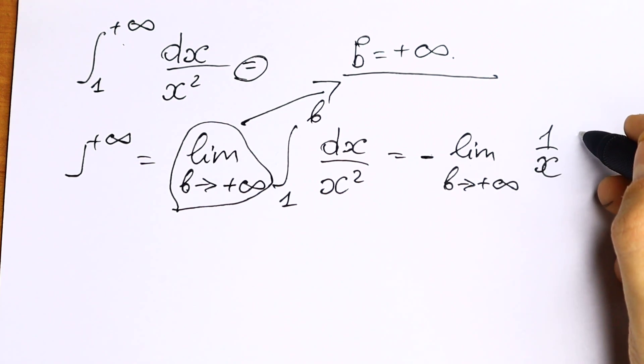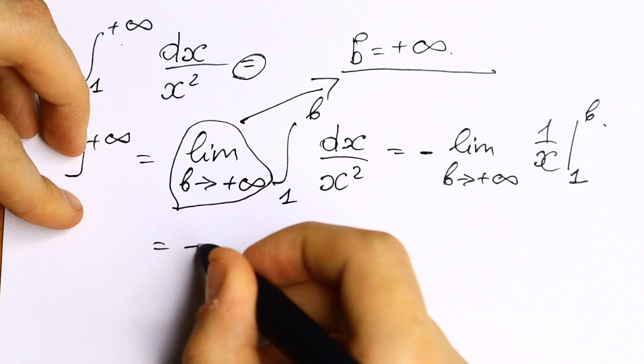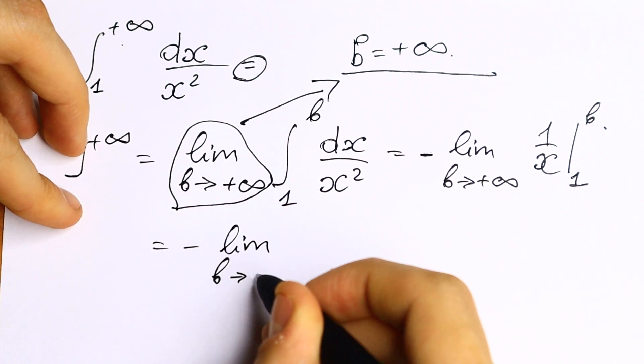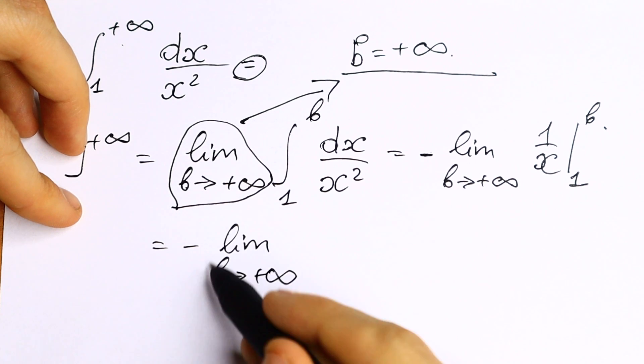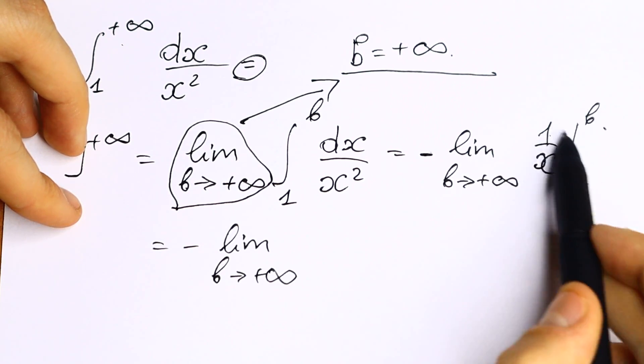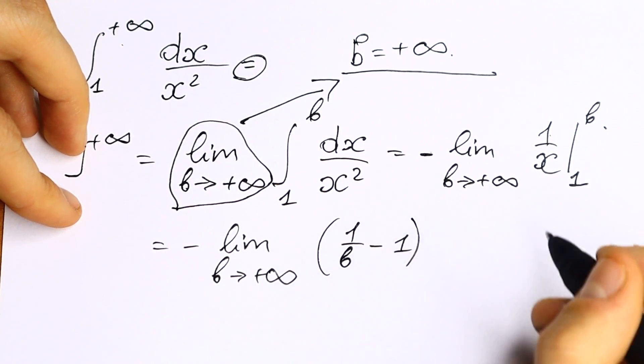We find our integral and we need to put 1 and b as well. Let's find our integral. We will have minus limit b approaches plus infinity. This is our limit, and of course we need to put 1 over b in the top, 1 over b, and minus minus 1.